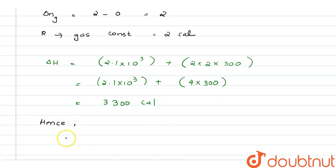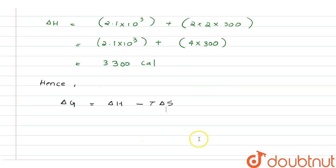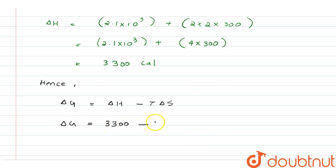Hence we can write: change in Gibbs energy, ΔG, is given by ΔH minus T·ΔS. So ΔG equals ΔH which is 3300 minus 300 into 20.